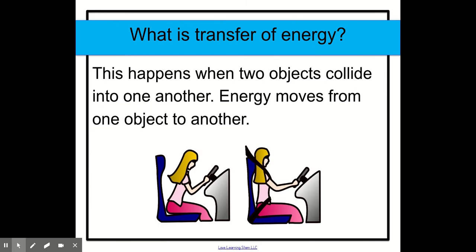We've been learning about transfer of energy between kinetic and potential energy. This happens when two objects collide into one another. Remember, when objects collide, it's when they crash into each other. Energy never goes away, but it moves from one object to another, and it's called transfer of energy.